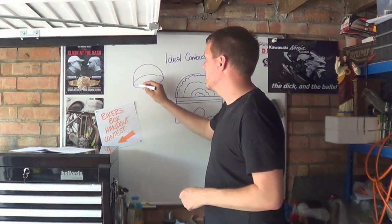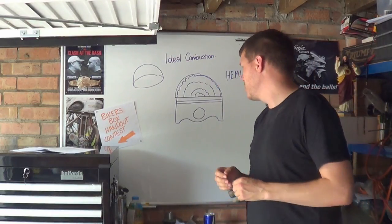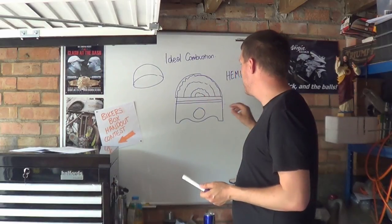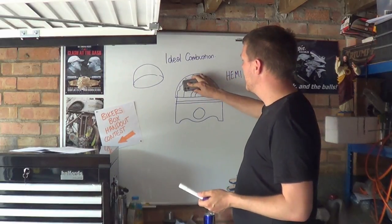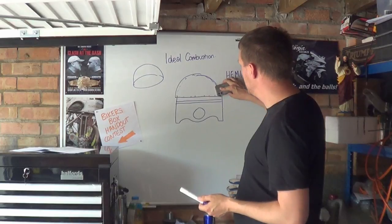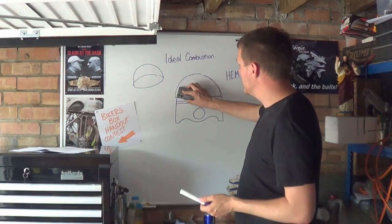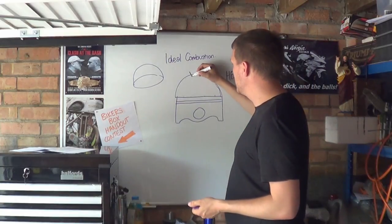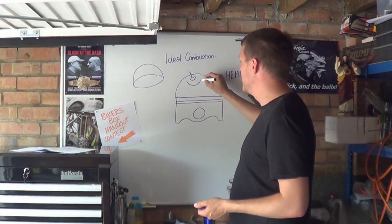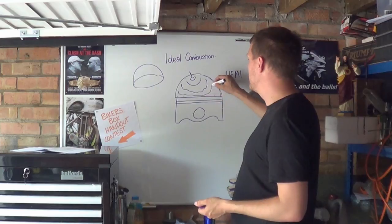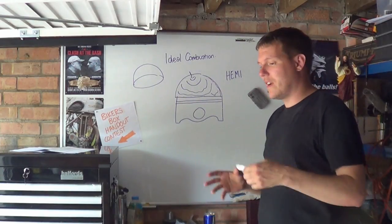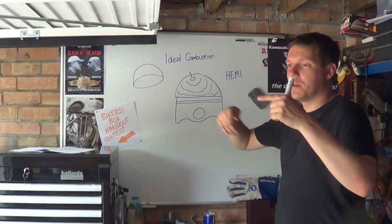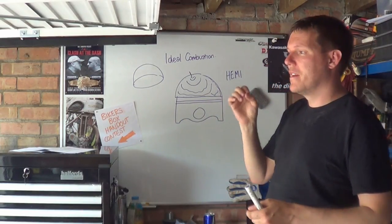There's one problem you might notice with this straight away. This is what the Americans call the hemi, this is a hemisphere. The problem with this is we are missing something here - our combustion wouldn't happen there because that's not where our ignition source is.